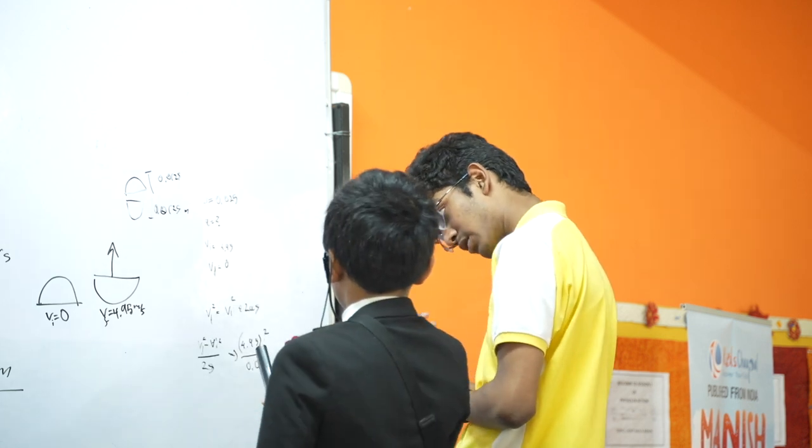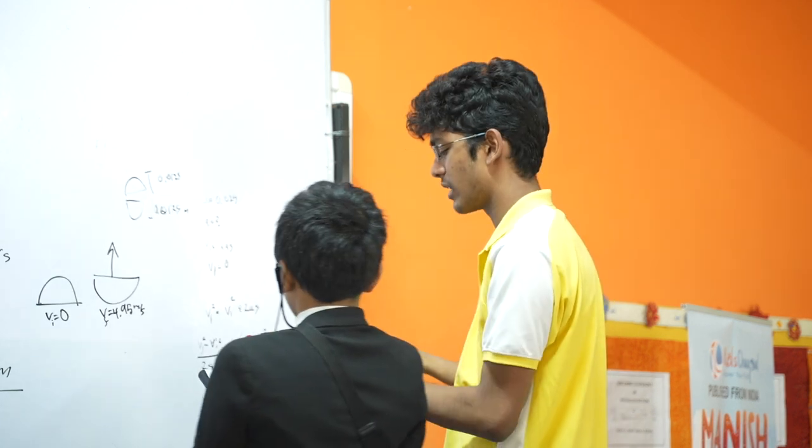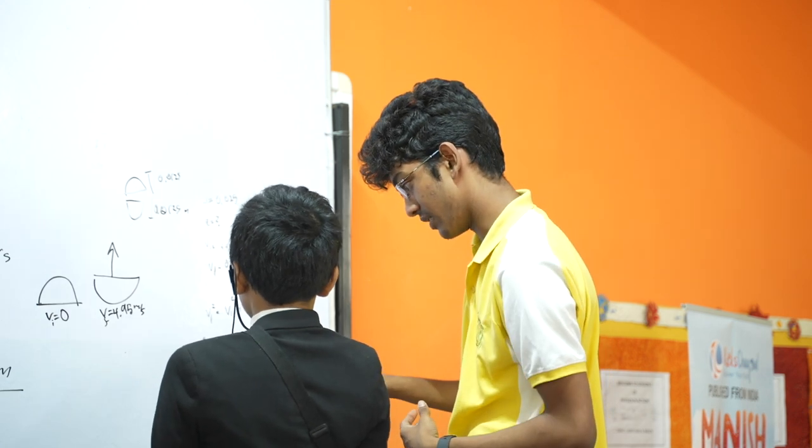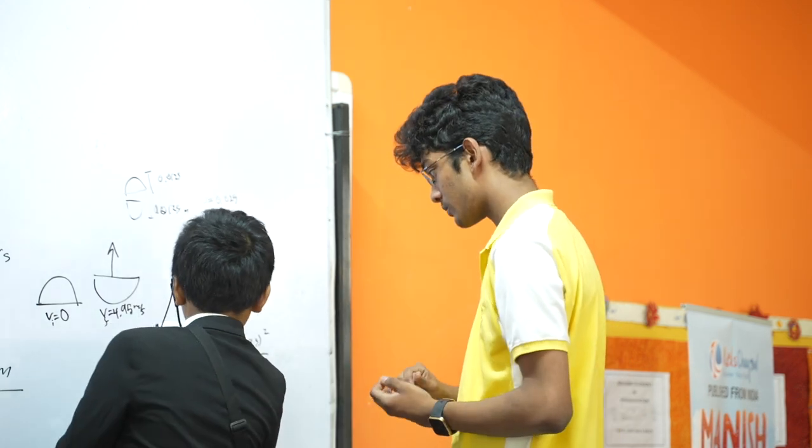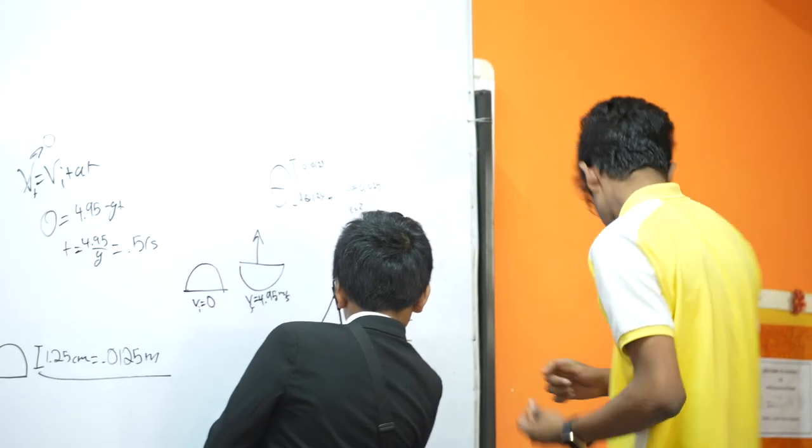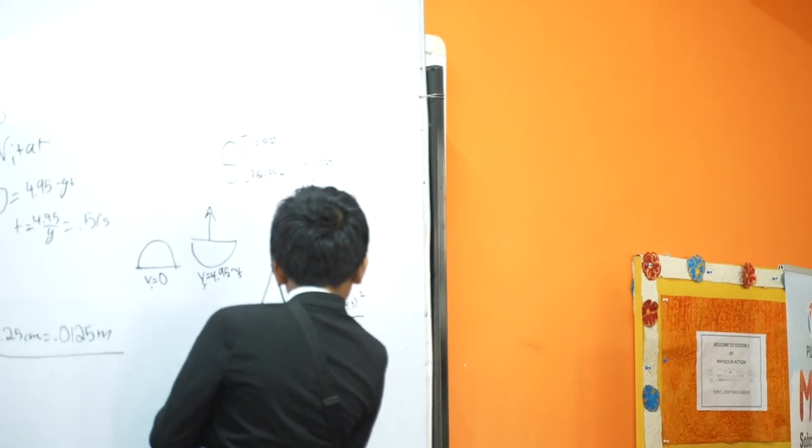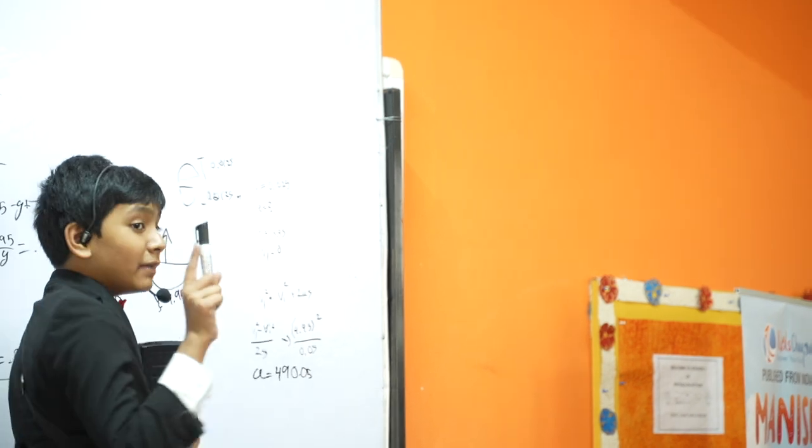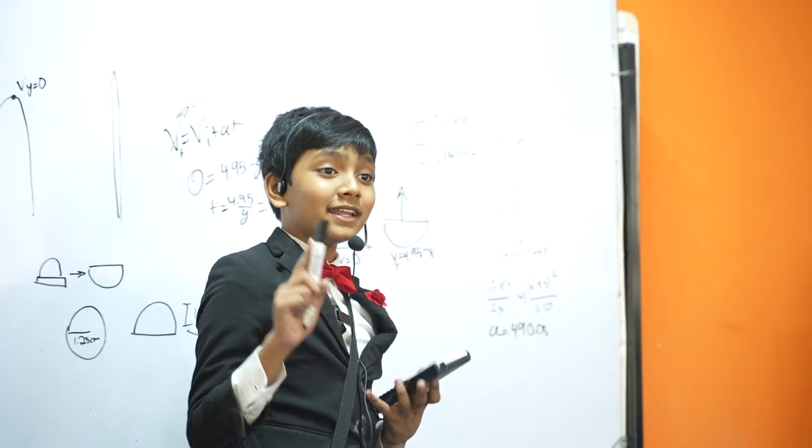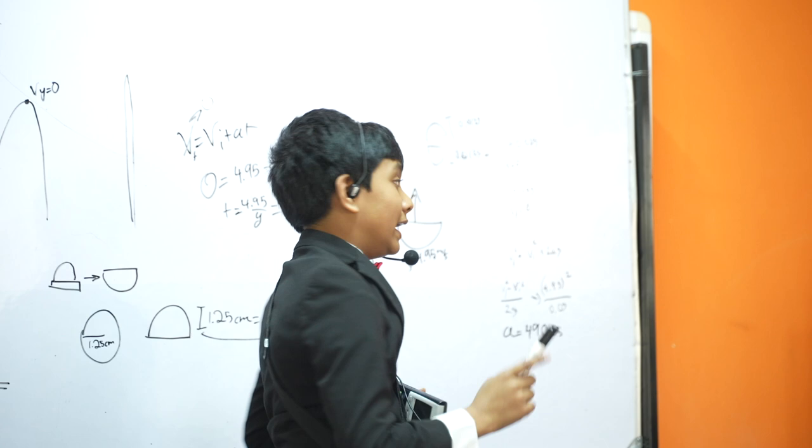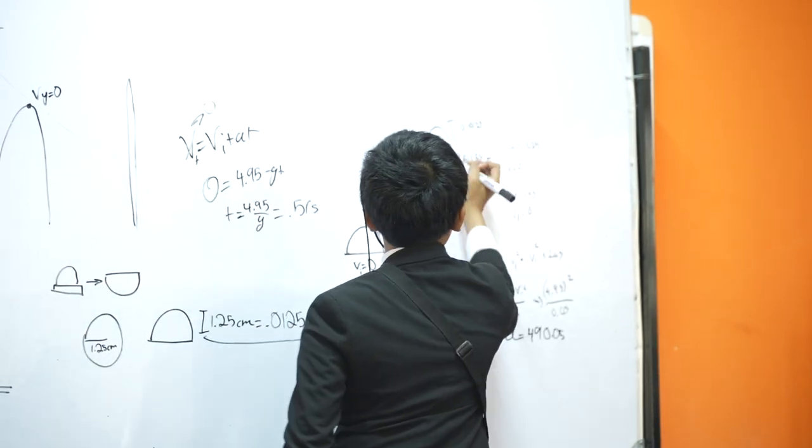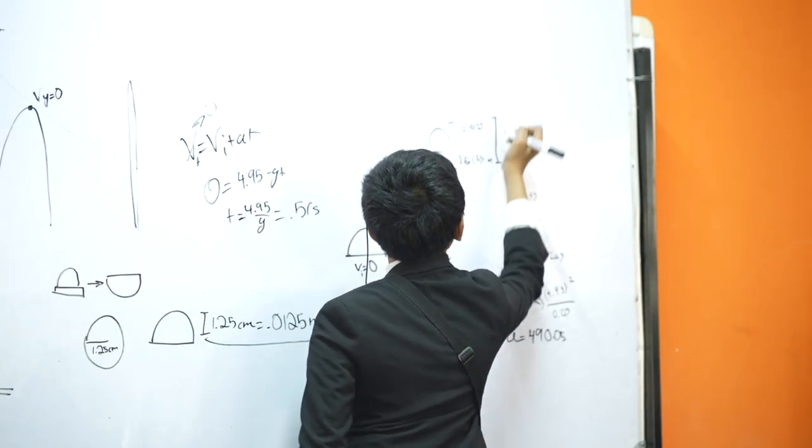490. Root over that? Yeah, no, this would be correct. A is this. Okay, yeah, 490.5. So, it doesn't really matter, you can go sit there.